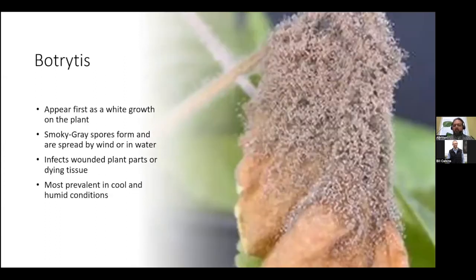One of the more common ones up north is Botrytis. It first appears as a white growth on the plant, which then eventually grows into a smoky gray spore that can be spread by wind or water. You're going to see this disease typically show up on wounded plant parts or dead plant material, and it's much more prevalent in cool and humid conditions, as opposed to Alternaria which thrives in warm humid conditions.